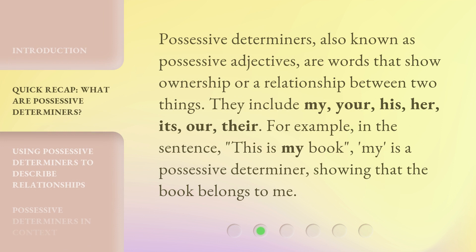Possessive determiners, also known as possessive adjectives, are words that show ownership or a relationship between two things. They include: my, your, his, her, its, our, their. For example, in the sentence 'This is my book,' 'my' is a possessive determiner, showing that the book belongs to me.